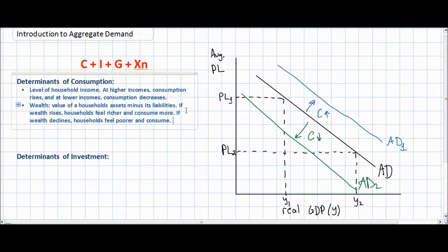This helps explain why a stock market bubble can lead to an increase in aggregate demand. Even though household incomes might not be changing, if the value of stocks held by households rises, households will feel more confident and consume in higher quantities. On the other hand, if there's a collapse in the stock market or real estate prices, household wealth will fall, households will feel poor, consume less, and aggregate demand will decrease.